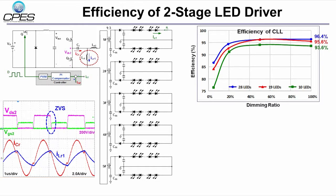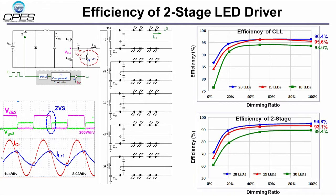The efficiency of CLL is tested under balanced load conditions. Even if the LED number changes from 28 to 10, higher efficiency is achieved from 20% dimming to full load condition. Similarly, for this two-stage LED driver, higher efficiency is achieved within a wide load range.